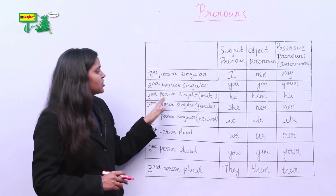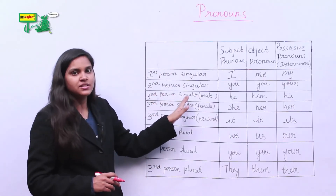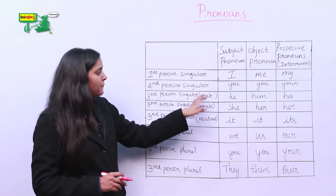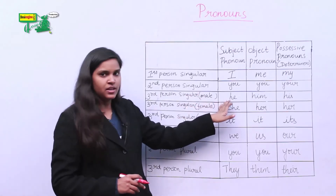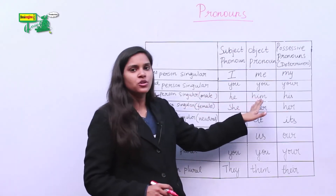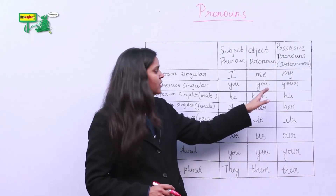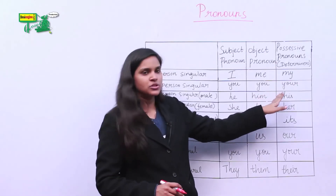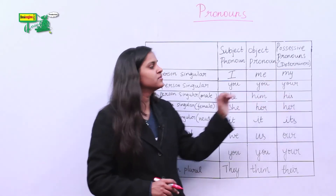The subject pronoun of third person singular male is he, the object pronoun is him, and the possessive pronoun is his.